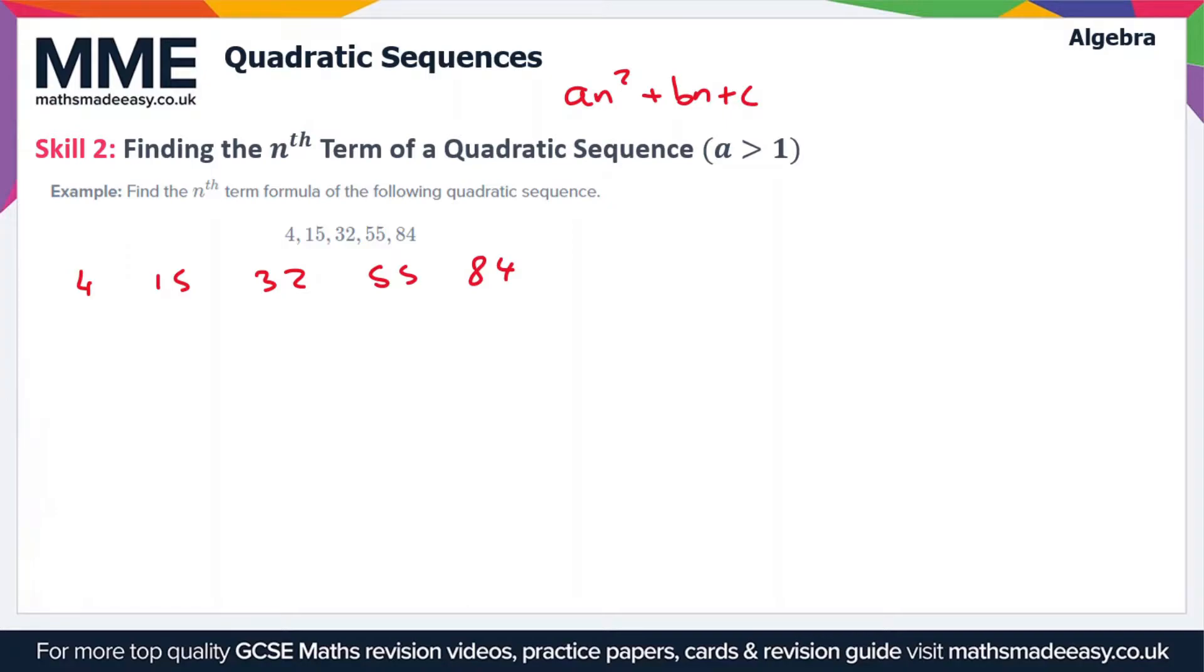As we did in the first video, we're going to find the difference between each of these terms to start with. So the difference between 4 and 15 is 11, so that's plus 11. And then from 15 to 32 is plus 17, from 32 to 55 is plus 23, and from 55 to 84 is plus 29.